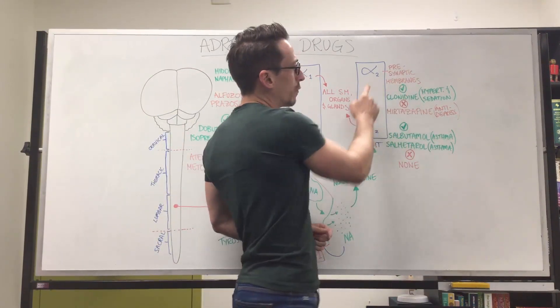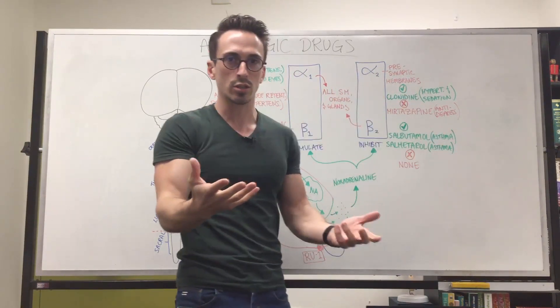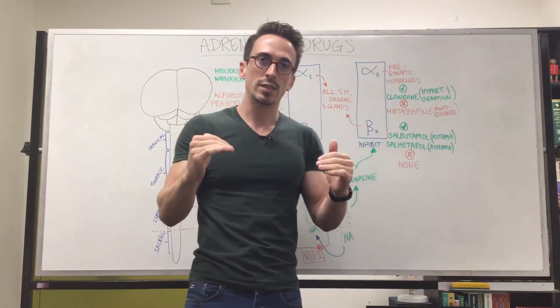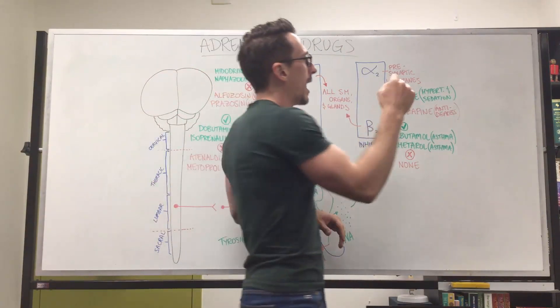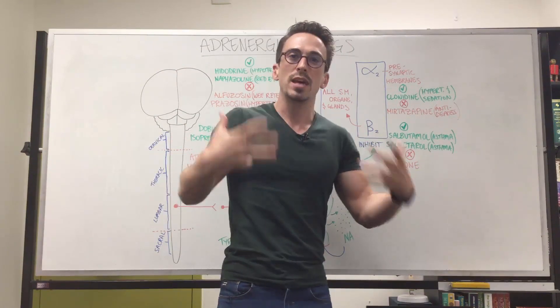For example, agonists of alpha-2 such as clonidine can be used to treat hypertension because it's going to be reducing the effects of all the sympathetic nervous system neurons. And it can be used for sedation because again, it's suppressing that sympathetic nervous system.